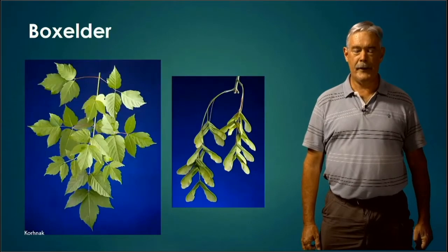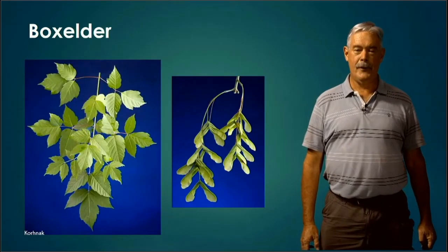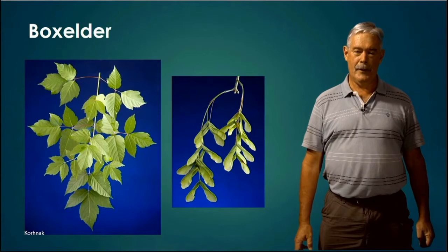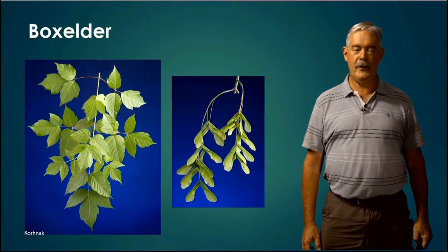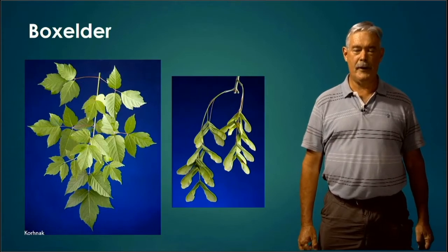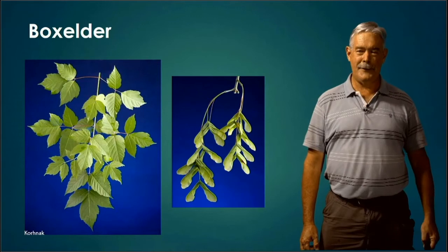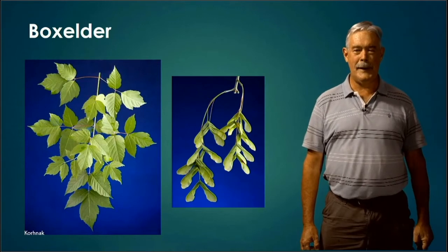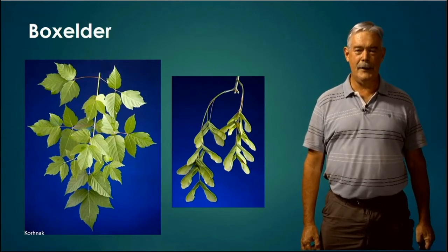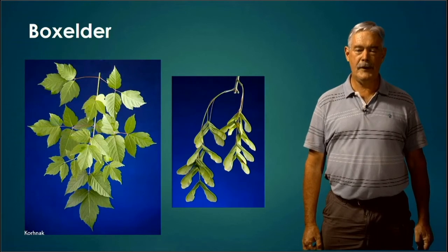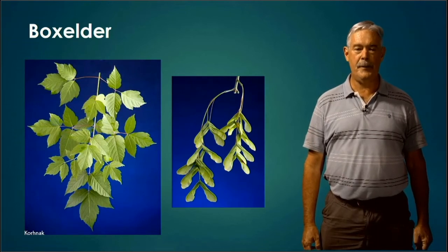Your box elder — people who don't know trees will step close to one of these young trees and say 'poison ivy,' because the leaves actually look a little bit like poison ivy leaves. It's a little different, but we do have a compound leaf. This tree is in the maple family, so it has opposite branching.